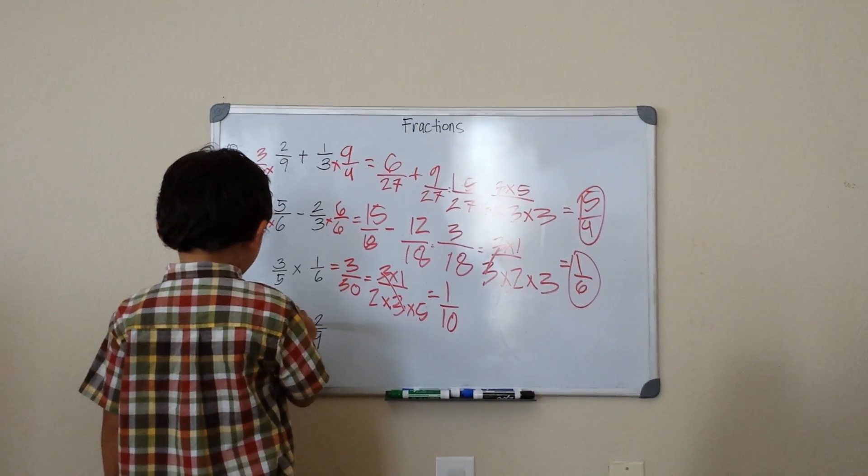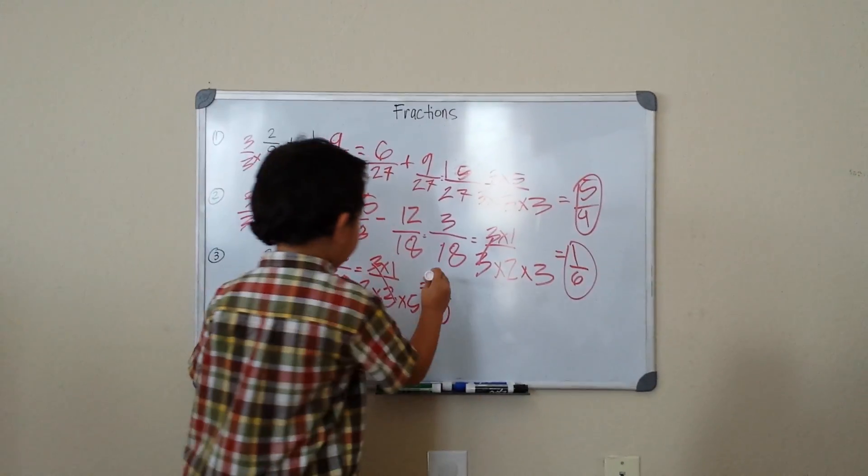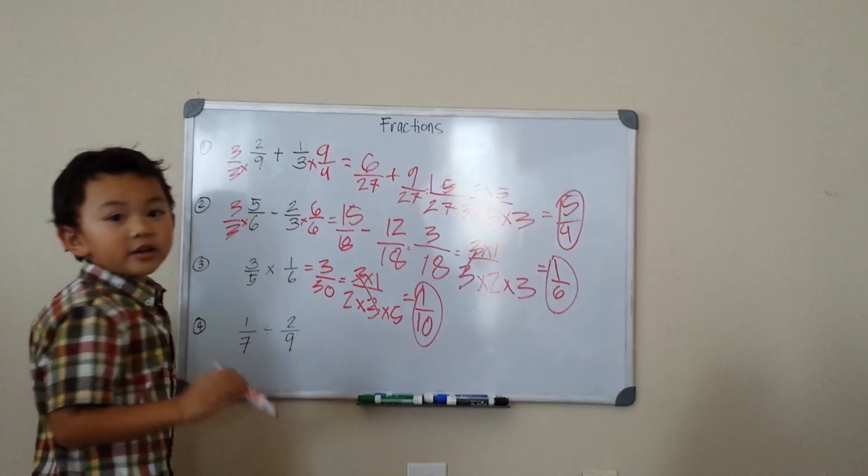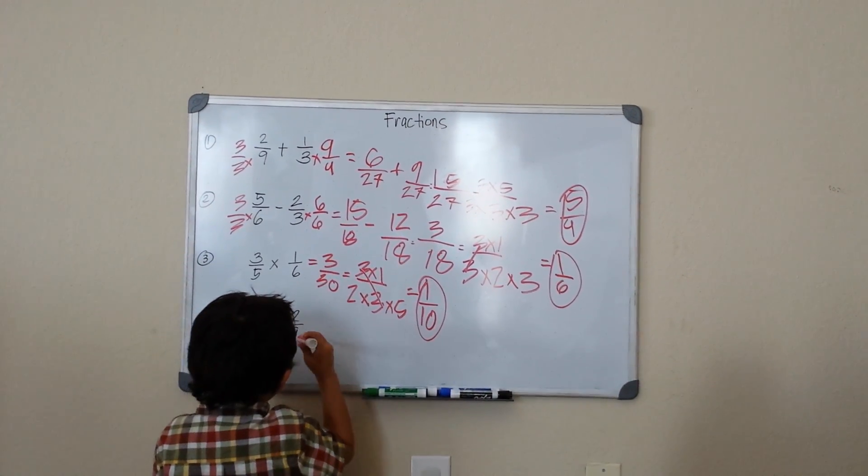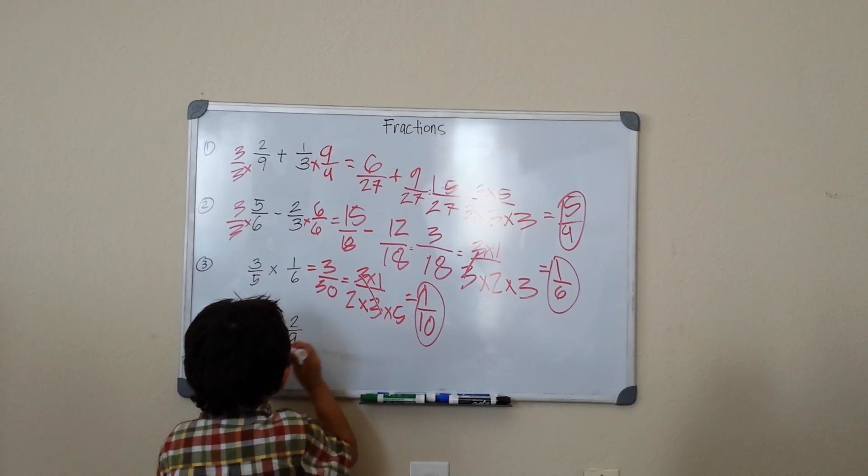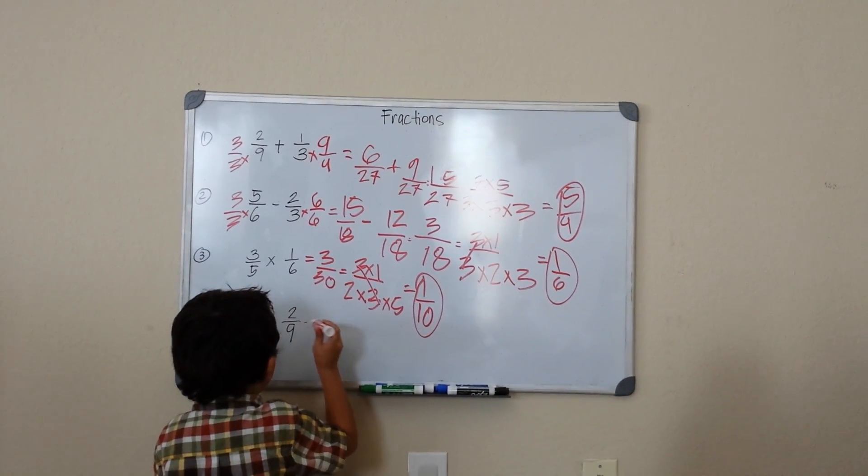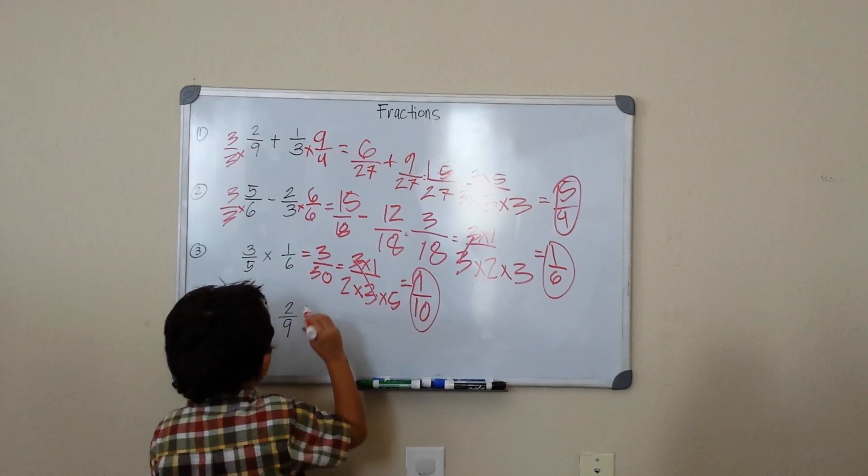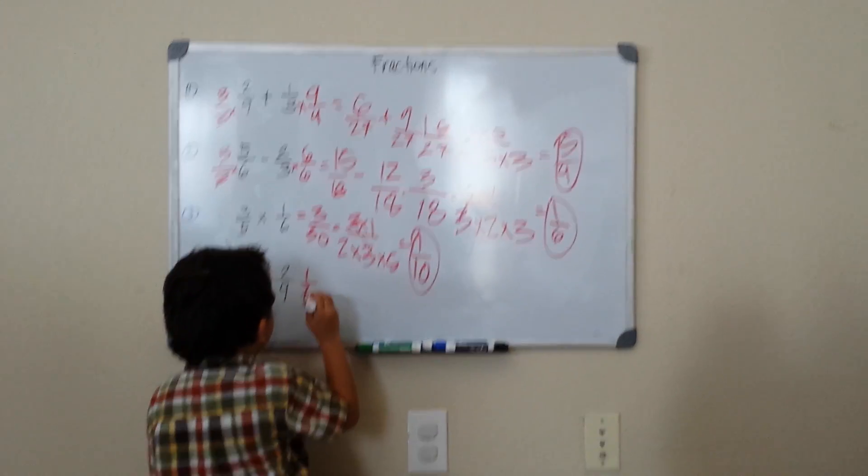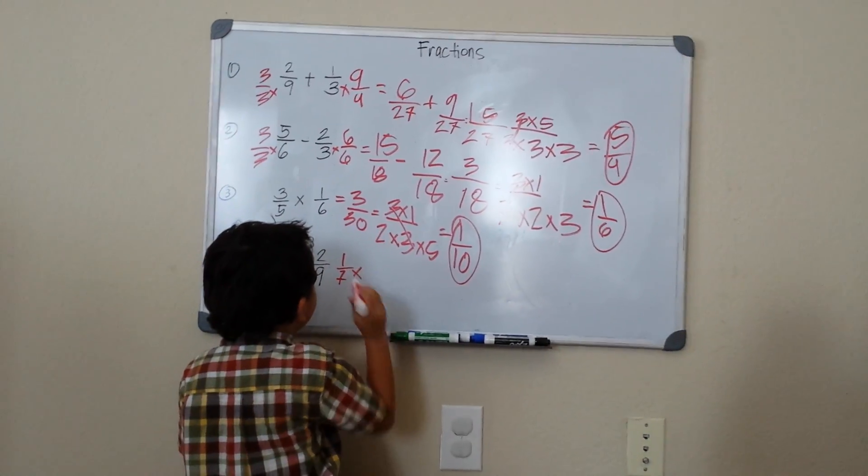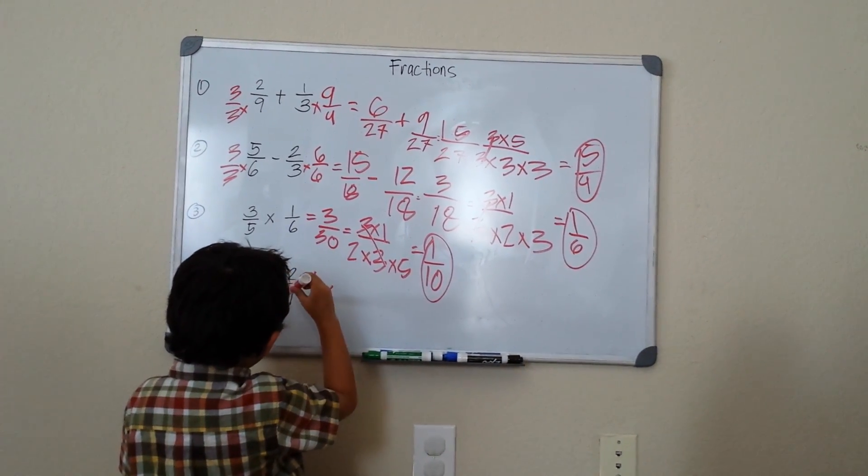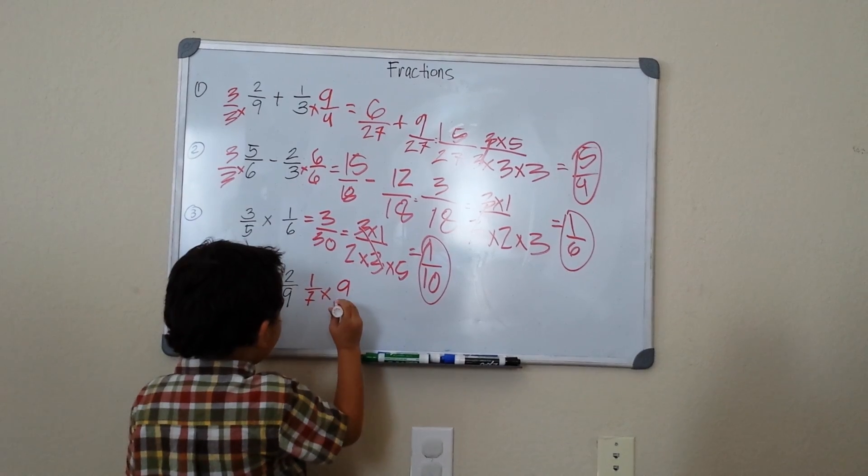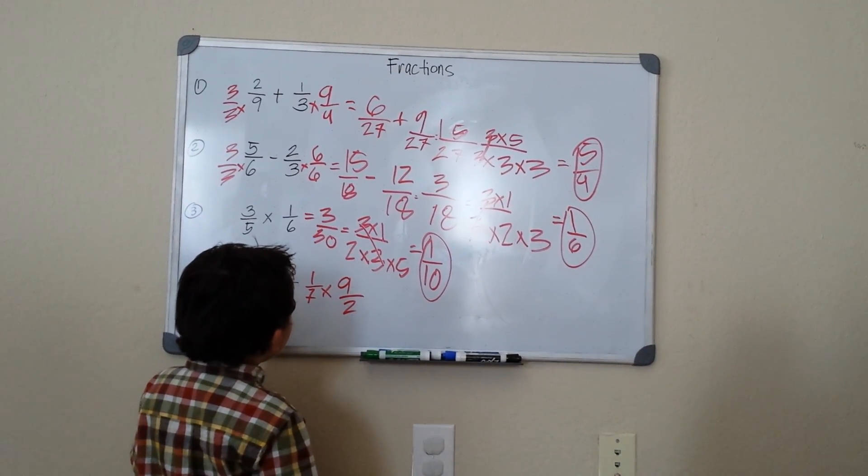1/7 divided by 2/9. Copy the 1/7, change to multiplication, and then get the reciprocal of 2/9, which will be 9/2. So 1 times 9 will give me 9, and 7 times 2 will give me 14.